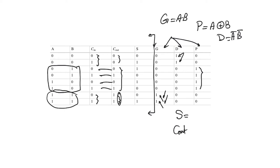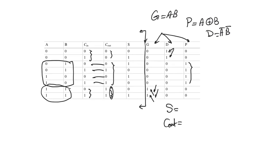We can also determine S and C_out in terms of G, P, and D, but we also need carry in because G, P, and D contain only information about A and B, while both S and C_out need C_in. Since P = A XOR B, and S = A XOR B XOR C_in, we get S = P XOR C_in.